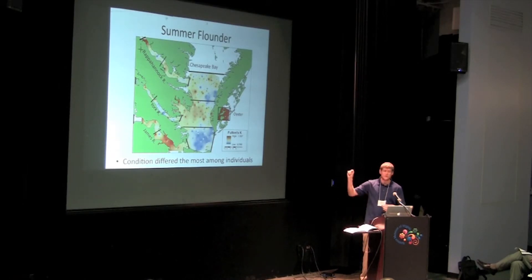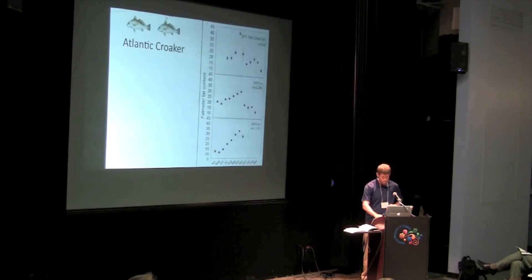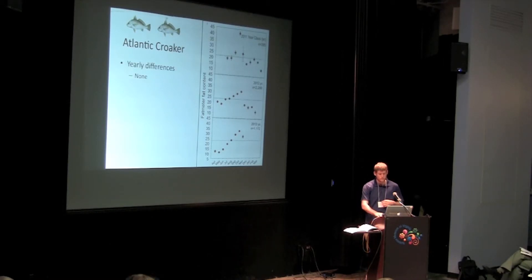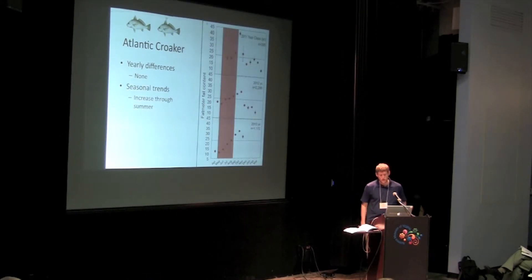Those red and blue dots that you see really just highlight the differences in condition among specific sampling locations. Moving on to Atlantic Croaker, here we see trends in condition through time as measured by the fat meter. Again, the dashed lines show the average condition each year and we didn't see any differences in Croaker condition.